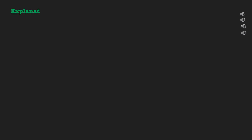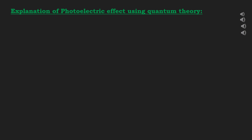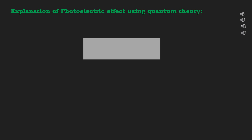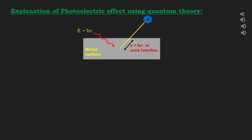Our next topic is the explanation of the photoelectric effect using quantum theory. According to Einstein, when a photon strikes a metal surface, some of its energy is used up to eject the electron from the metal atom. This means that a certain minimum amount of energy corresponding to the binding energy is necessary to detach the electron from the metal. When a photon of energy hν strikes a metal surface, some of its energy called threshold energy or work function is used up to remove the electron, and the remaining energy is given to the ejected electron as kinetic energy.